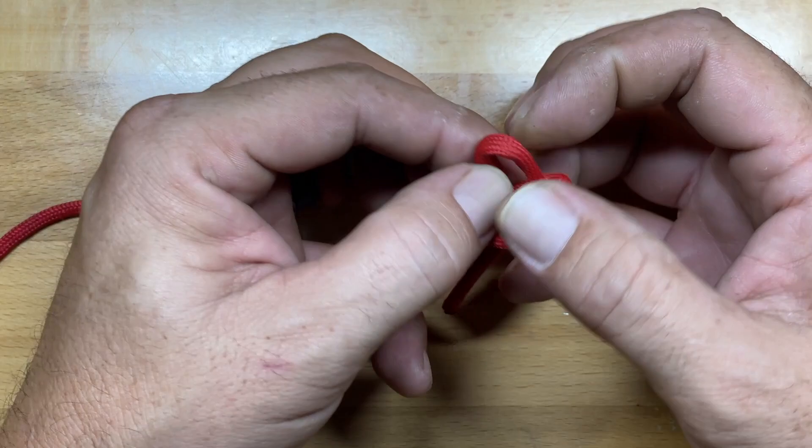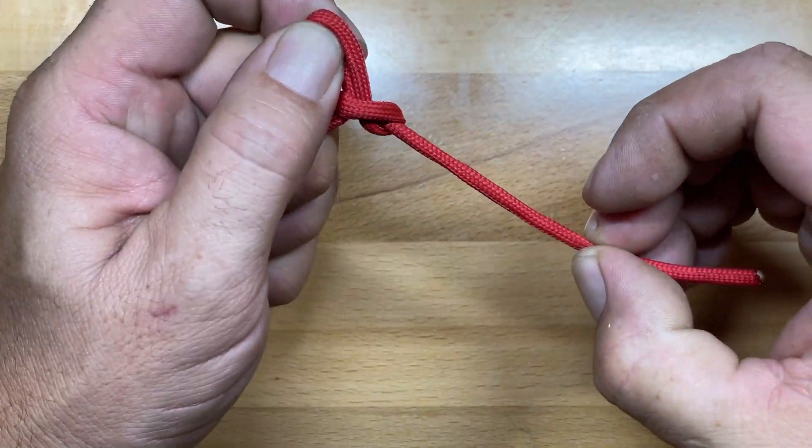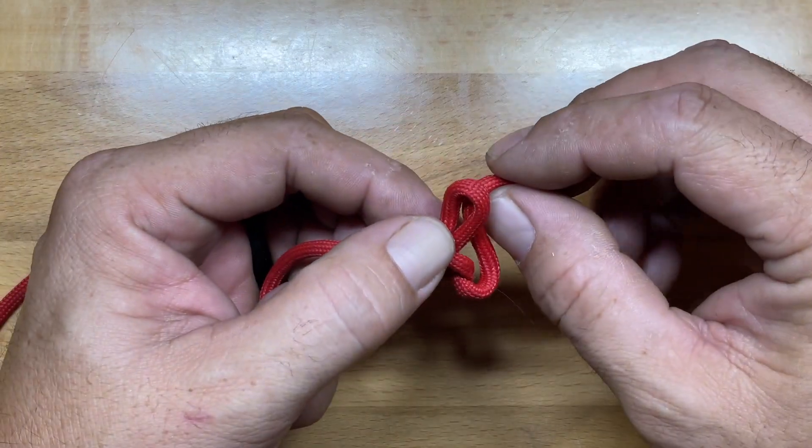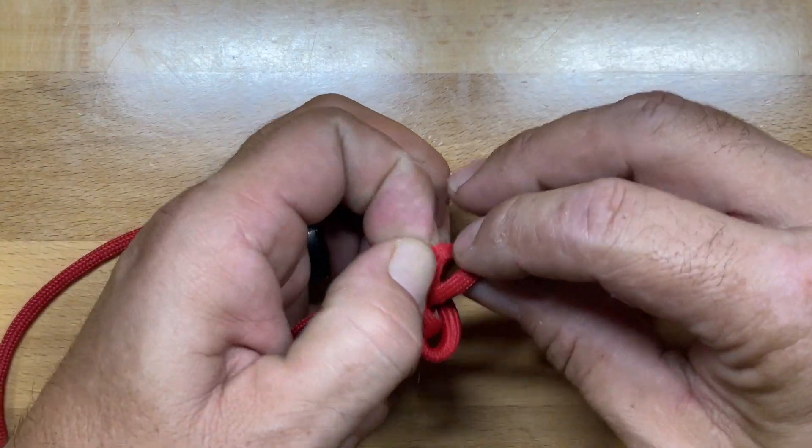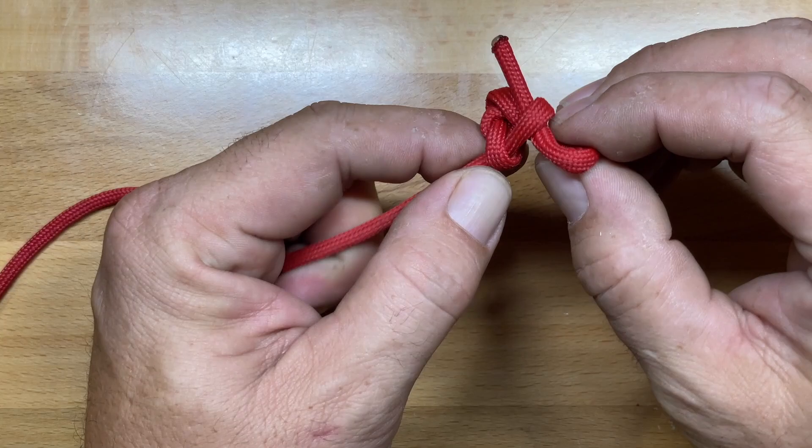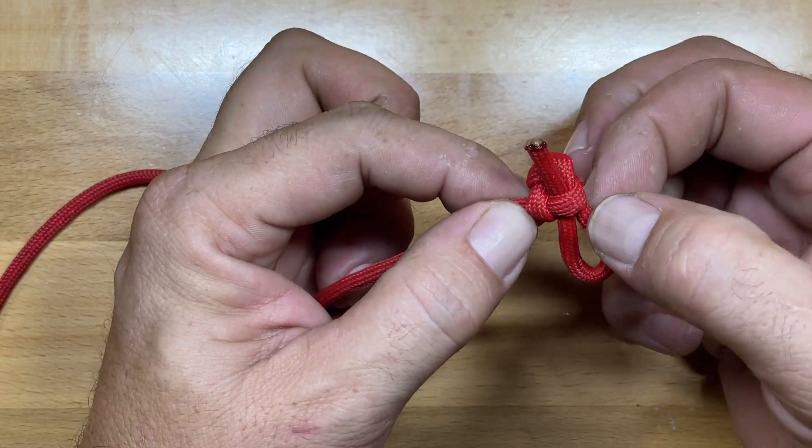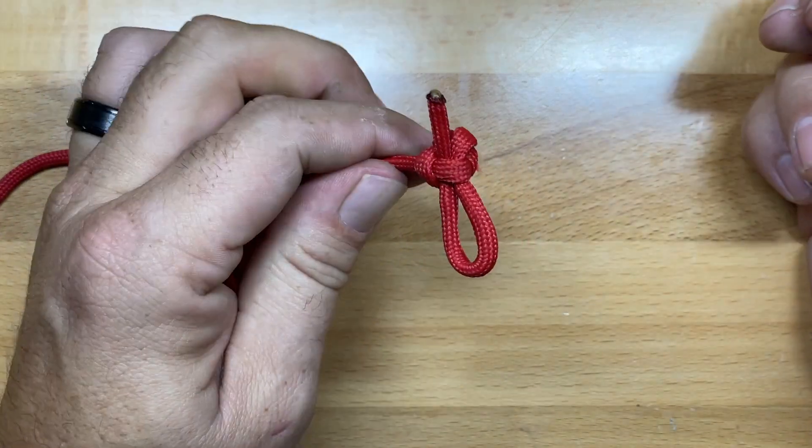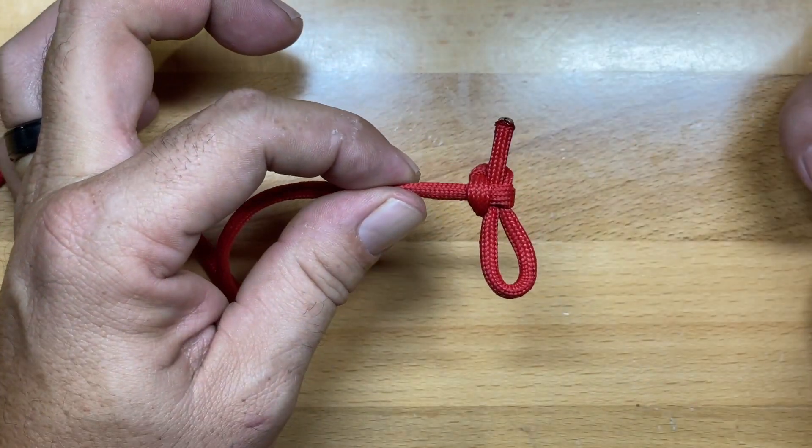Then we'll pull a small loop of the standing end through and snug that up just a little bit. Now with the tail end, we're going to send another loop through that loop, and then we can tighten the whole thing down. Pull from here and then on this side of the loop pull them together, and that has created a slipped stopper knot.